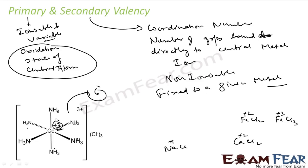Cobalt, as we will observe throughout this chapter, always has a secondary valency of 6. The primary valency is 3, and that is variable — cobalt can also have an oxidation state of plus 2. But secondary valency is the number of groups bonded directly to the central metal ion, also called the coordination number. This value is fixed for cobalt at 6, and it is non-ionizable, meaning these bonds will not break in solution — they are stronger bonds.